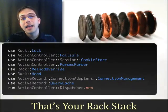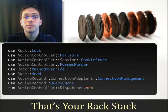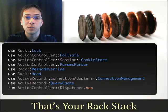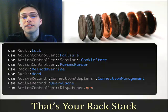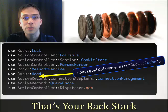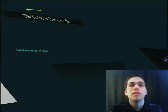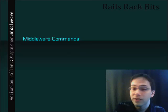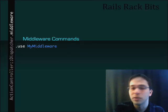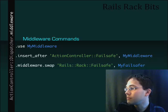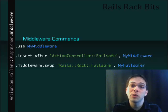Now that you know what each of these items do, you should be comfortable enough to insert your own pieces of Rack middleware, know where they go, or maybe even replace some of these with your own. By default, using 'config.middleware.use' in environment.rb will insert it at a default position. There are also commands like insert_after, and middleware swap if you want to swap out a piece of middleware with one of your own.